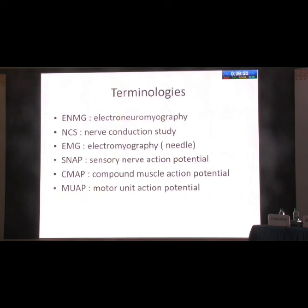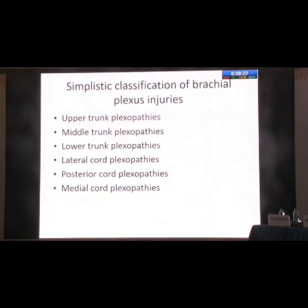EMG earlier used to include complete NCS and EMG, but now at least in India, if you write EMG it means only needle EMG, because private labs are doing it and there is a difference in expense between conduction studies and needle insertion. SNAP is sensory nerve action potential, CMAP is compound muscle action potential when we stimulate a motor nerve, and MUAPs are motor unit action potentials when we put a needle in the muscle and activate it.